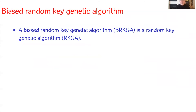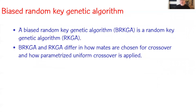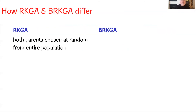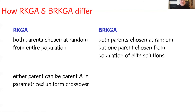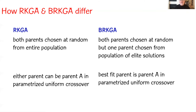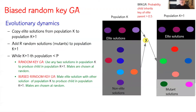The bias random key genetic algorithm is also a random key genetic algorithm of the Bean type. BRKGA and RKGA differ in how mates are chosen for crossover and how parameterized uniform crossover is applied. In Bean's algorithm, both parents were chosen at random from the entire population, whereas in BRKGA, one parent is chosen from the elite set. In Bean's algorithm, either parent can be parent A — the one with a higher probability of passing along its gene — whereas in BRKGA, the best-fit parent is parent A. So in BRKGA, you pick one parent from the elite set, one from the non-elite set, and flip a coin with probability greater than 0.5 of the child inheriting the key of the elite parent.